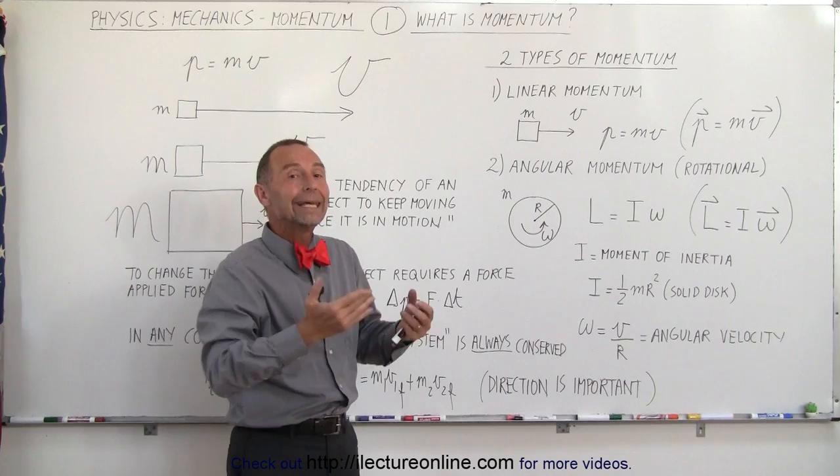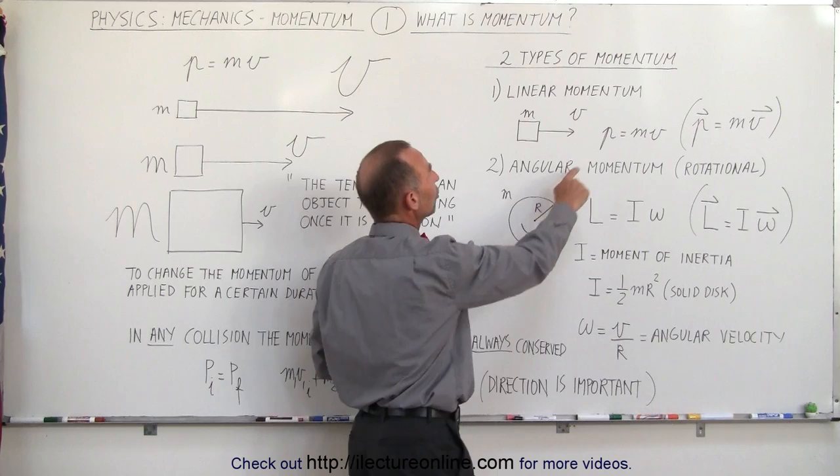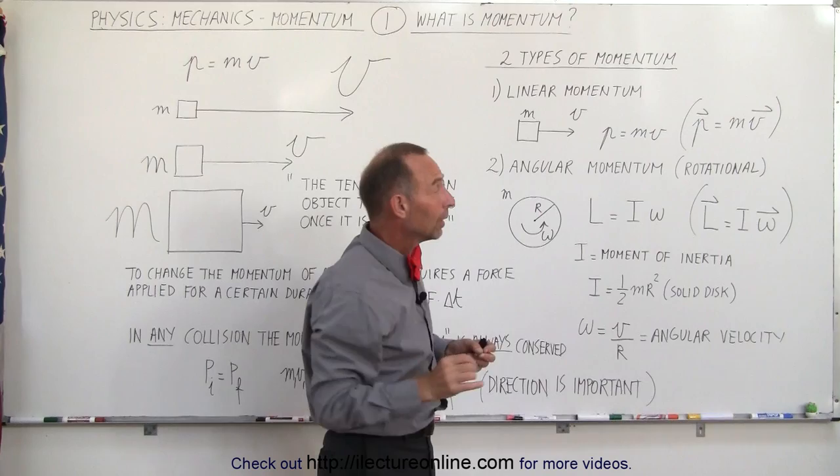These objects have a certain amount of mass and are moving at a certain velocity, typically in a straight path. We call that linear momentum, and so the momentum is simply the product of the mass times velocity.